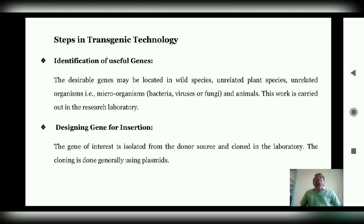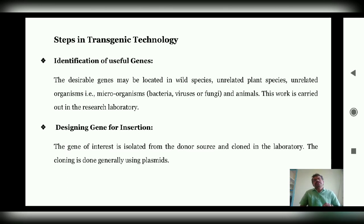What are the steps in transgenic technology? The first step is to identify the useful gene, also called the gene of interest (GOI). We need to locate the desirable genes in wild species, unrelated plant species, or in any other microorganism. This is generally done in research laboratories. The gene of interest is then isolated from the donor source.